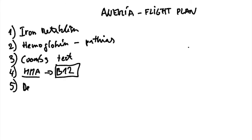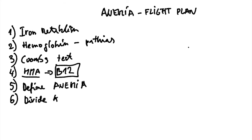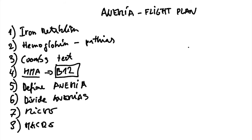Five: we're going to finally define anemia, talk about clinical correlations, what it is and why it is dangerous. Six: we're going to divide anemias into two different groups. Then I'm going to specifically talk about microcytic anemias, another video about macrocytic anemias, and another on normocytic anemias — that's a big one because there are many causes divided into different groups.